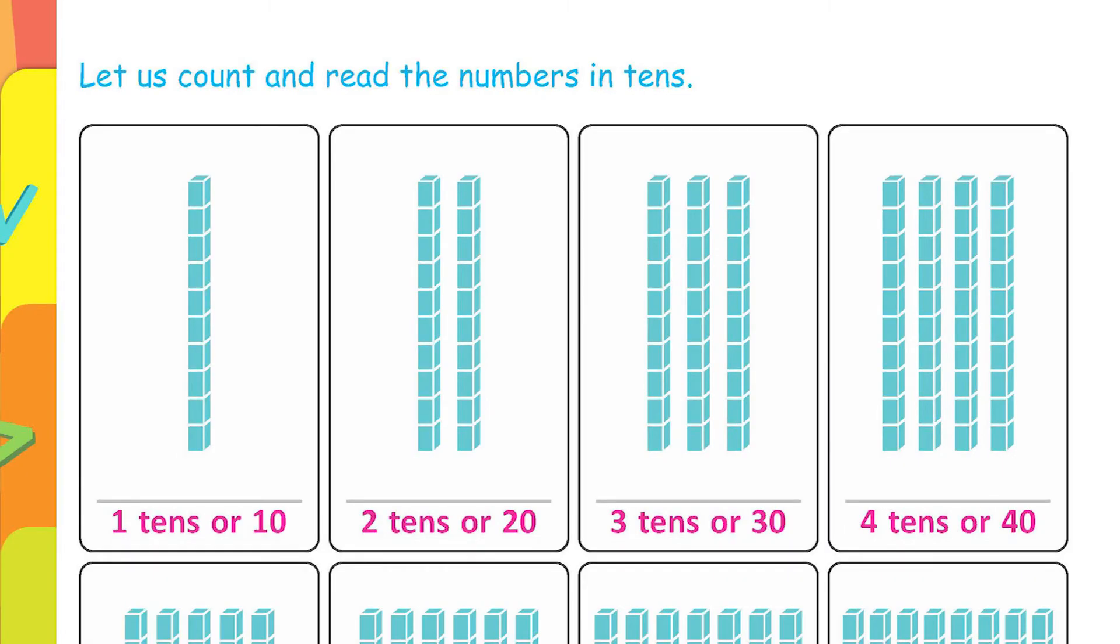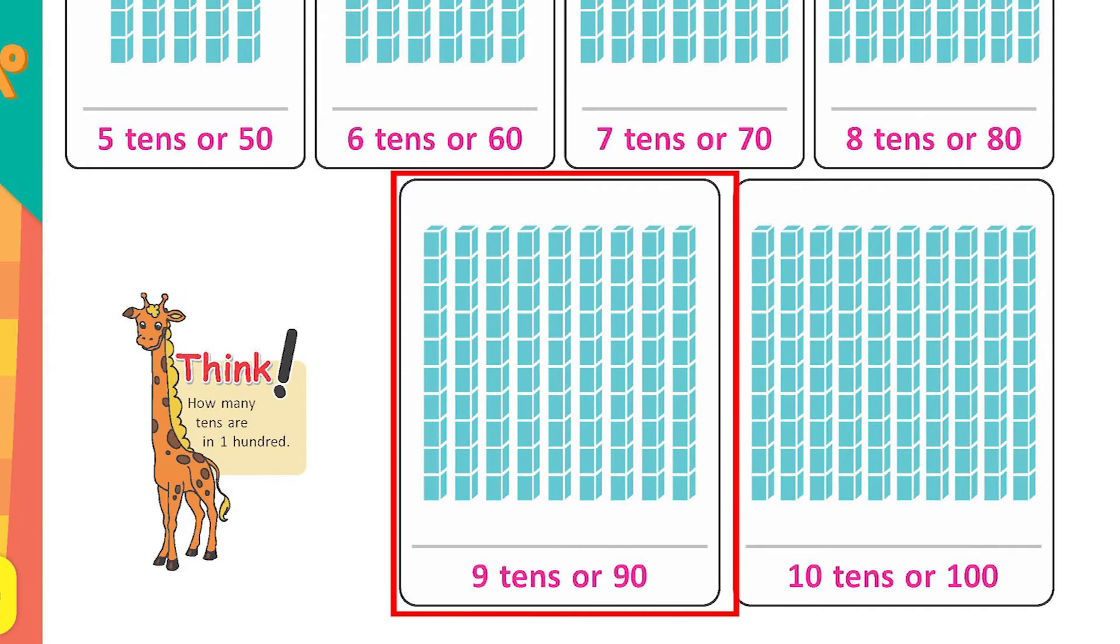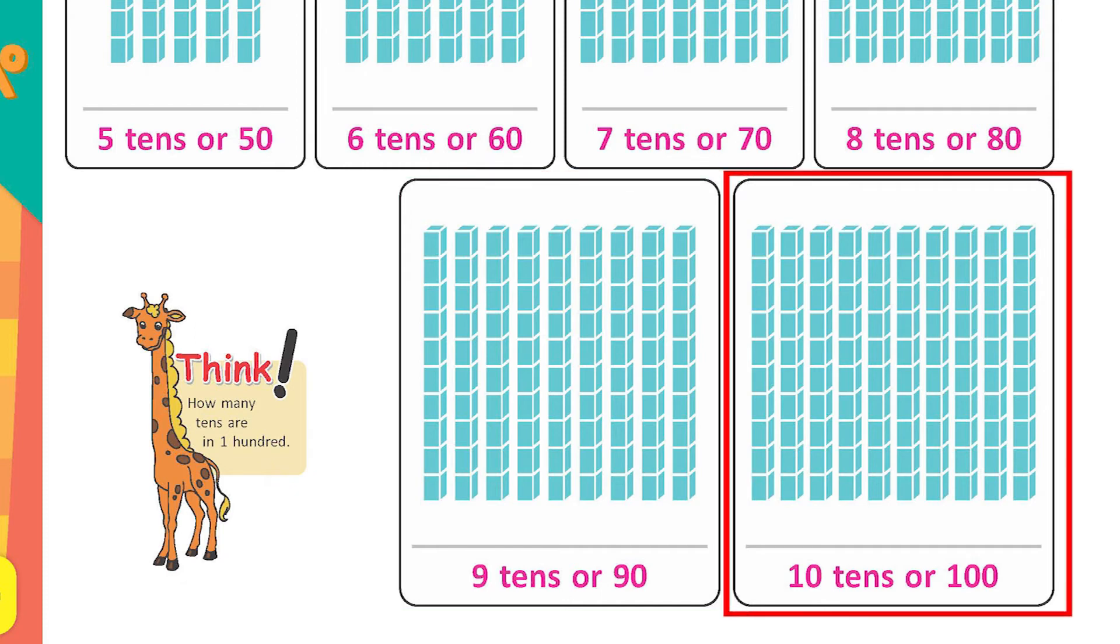Page number 10 is there to reinforce your 10s concept. Now if you look at the picture, 1 bar with 10 ones is given. So that means 1 ten, then 2 bars, that means 2 tens, 3 bars, 3 tens and so on. And then 9 tens, that means 90. And 10 tens make 100.